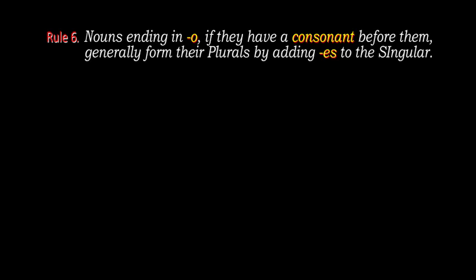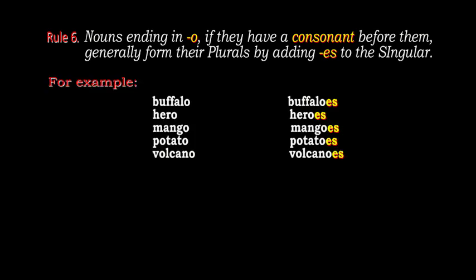Rule number 6: Nouns ending in o — if they have a consonant before them — generally form their plurals by adding -es to the singular. For example, buffalo changes to buffalos, hero changes to heroes, mango changes to mangoes, potato changes to potatoes, volcano changes to volcanoes. We add -es to the end of the letter o to change it to the plural form.